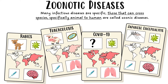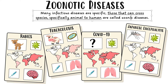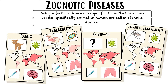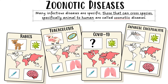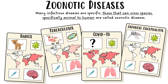Many infectious diseases are species-specific, but those that can cross species — specifically from animal to human — are called zoonotic diseases. We need to know about four specific examples: rabies, tuberculosis (otherwise known as TB), COVID-19, and Japanese encephalitis.